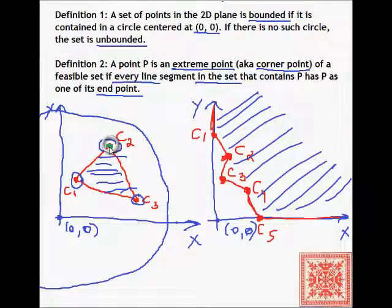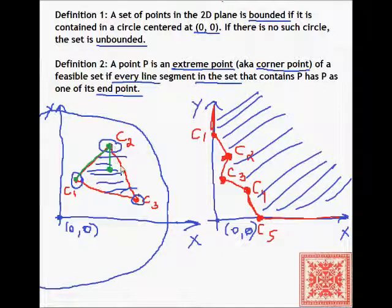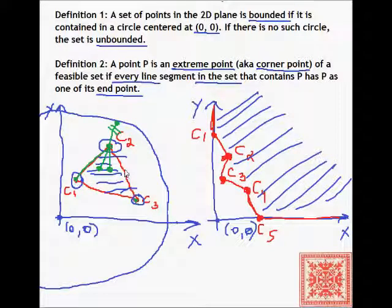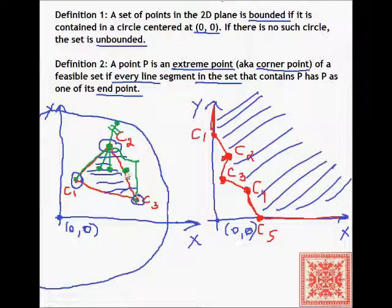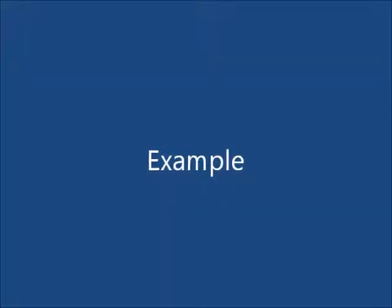Returning to definition two: a point P is an extreme point. C2 is an extreme point because every line segment in the set that contains P has P as one of its endpoints. You might think about a segment crossing through it, but part of that segment is not in the feasible set, so it doesn't count. The same argument applies for C1 and C3. An interior point is not an extreme point because the segment C2 to C3, which is in the feasible set, does not have that point as one of its endpoints.